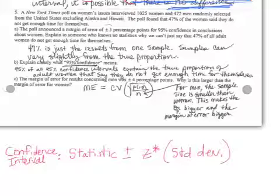We've got a margin of error of 3%, and then we get a poll that gives us 47% of women say that they do not get enough time for themselves. So, why can we not just say 47 is the answer?